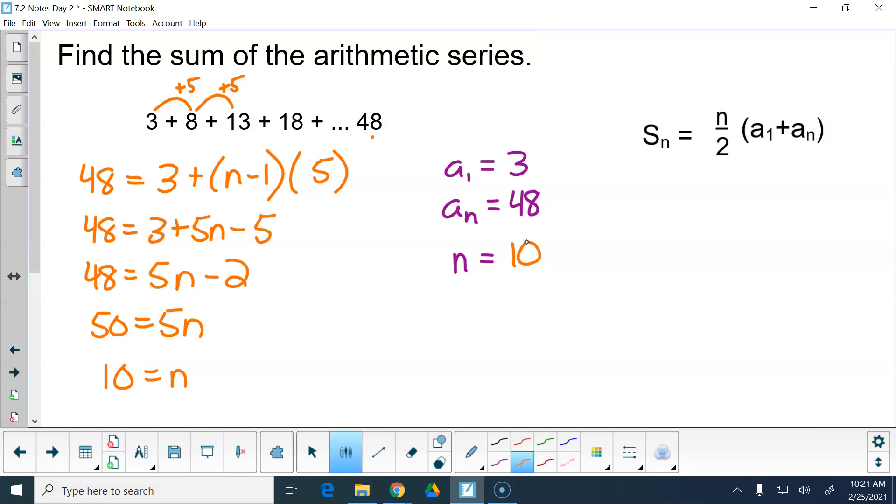Now I have enough information to go over here and say, well, n is 10 divided by 2 times 3 plus 48. 10 divided by 2 is 5. 3 plus 48 is 51. So the sum of the first 10 terms in this series is 255. Which is a lot easier than having to write out every single term of this series and then having to add them all together. Love it.